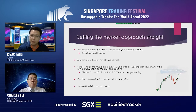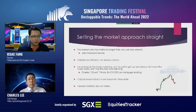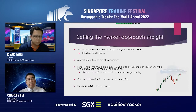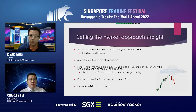For as long as the music is playing, you've got to get up and dance. When the music stops, don't be the only one still dancing — in context, Citibank was still dancing when the mortgage crisis happened. Capital preservation is more important than pride. We should cut losses when we know we are wrong. Forward stats are not stable — whatever I'm saying today is not cast in stone. There are always new developments that may alter views.